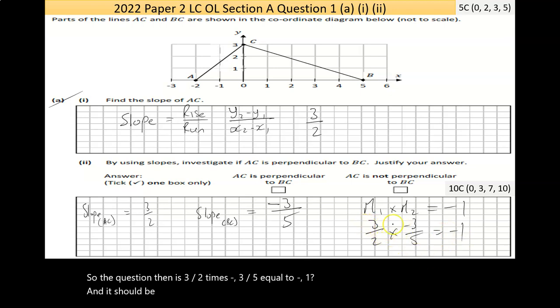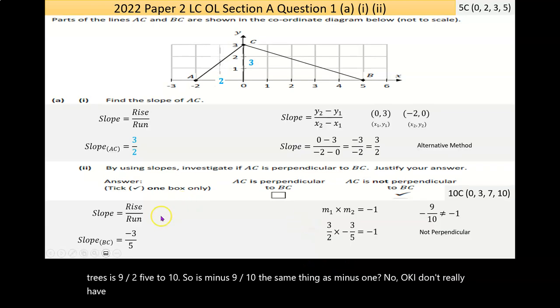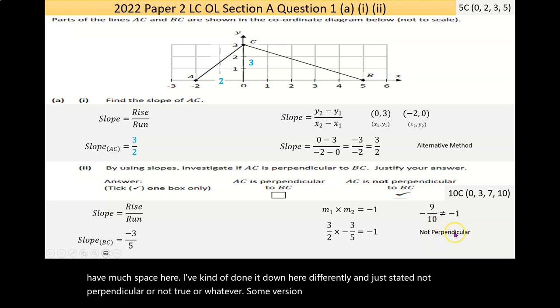So the question is, three over two times negative three over five equal to negative one? To multiply fractions top by top, so it would be plus by minus is minus, three threes is nine, over two fives is ten. So is minus nine over ten the same thing as minus one? No. I've kind of done it down here differently and just to state it, not perpendicular or not true.